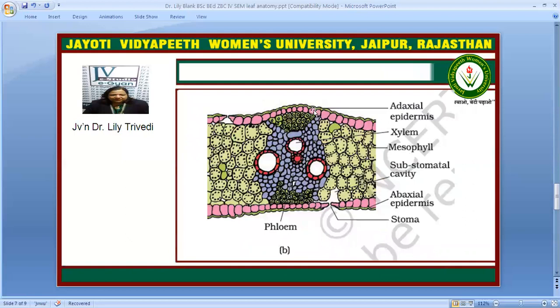This is the structure of a monocot leaf. You can see there is no differentiation into spongy and palisade parenchyma cells. Besides, the monocot leaf also has sclerenchymatous cells which are present and provide strength to the leaves.